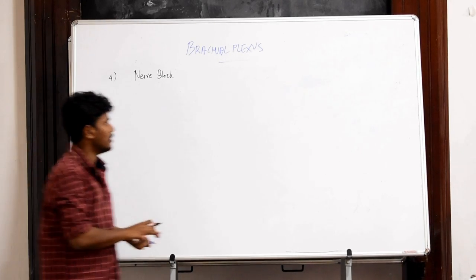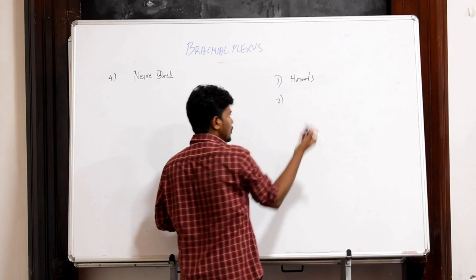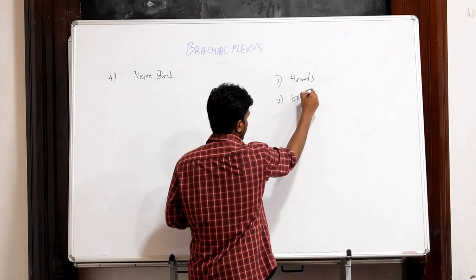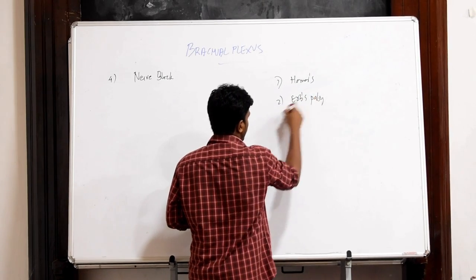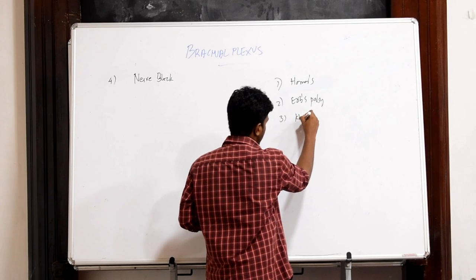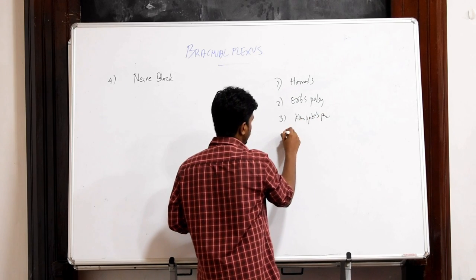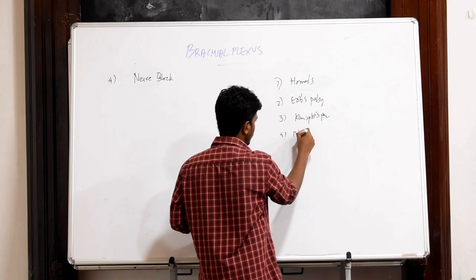So, the four clinical features are: first one is Horner's syndrome in total injury, the second is Erb's palsy or policeman or waiter's tip, third is Klumpke's and the fourth one will be nerve block.